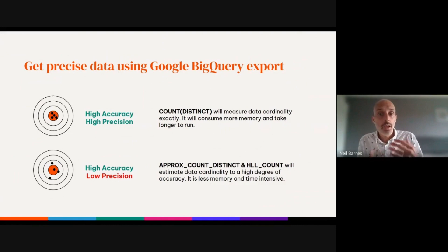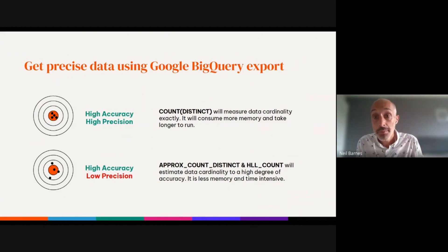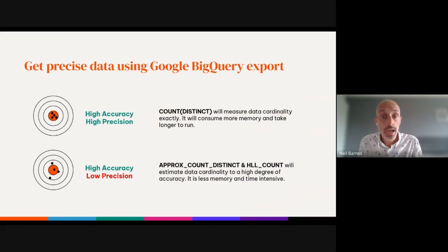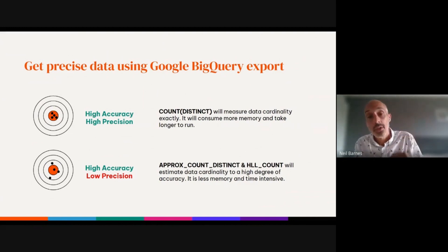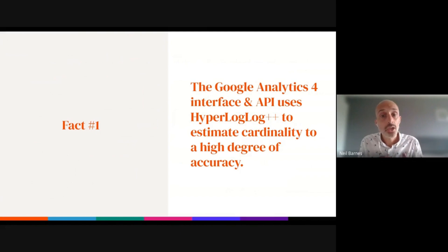Thanks to the democratization of Google Analytics 4 and the Google BigQuery raw data export, we do have the ability to get user data of both high accuracy and high precision if required. We can do this by running a distinct count of the user's pseudo-ID within the BigQuery raw data export, which will measure the users metric exactly — but be aware this consumes a lot of memory and takes time. Within BigQuery you also have the option to use APPROX_COUNT_DISTINCT or HLL_COUNT on the user's pseudo-ID for high accuracy but lower precision. So it is a myth that the GA4 interface reports to a high degree of accuracy and precision; instead it uses HyperLogLog++ to estimate cardinality to a high degree of accuracy.